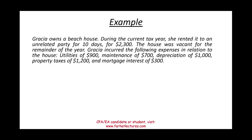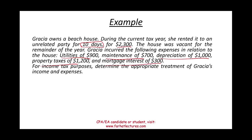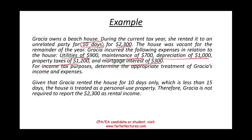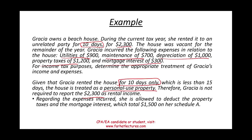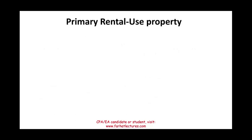Garcia owns a beach house. During the current tax year, she rented it to an unrelated party for 10 days for $2,300, and the house was vacant for the remainder of the year. She incurred utilities, maintenance, depreciation, property taxes, and mortgage interest of $300. Since Garcia rented the house for only 10 days — less than 15 — it is considered personal use property. Therefore, Garcia is not required to report the income. Regarding expenses, she may deduct property taxes and mortgage interest, totaling $1,500, on Schedule A.